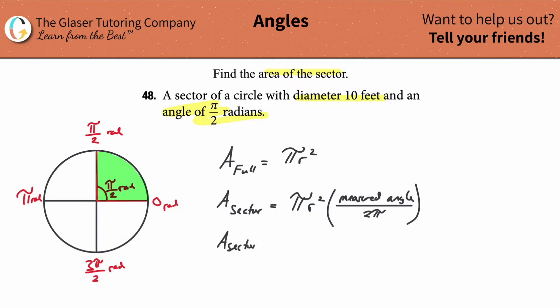So here the area of a sector will be equal to π multiplied by the radius. And by the way, did they tell us the radius? Well they didn't, but they told us the diameter. The diameter represents that whole length from one end of the circle to the other, and the radius represents half of that from the center to the edge of the circle. So that should be 5 feet. So you're going to take that 5 feet value and square it because that's the radius, and then multiply that by the measured angle. The measured angle is π/2, and you're going to divide that whole thing by 2π.